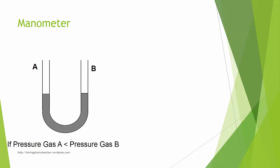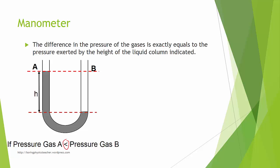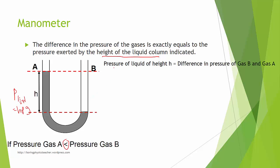Looking at the situation where pressure B is greater than pressure A, the difference in the gas pressure equals the pressure exerted by the height of the liquid column indicated. The pressure of the liquid column is equal to height times density times g. So the pressure of liquid column of height H equals the difference between pressure of gas B and gas A, meaning gas B minus gas A.